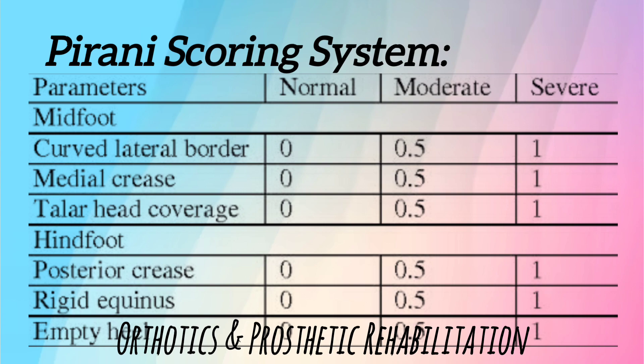The Pirani scoring system is based on six well-described clinical signs of clubfoot. Number one is posterior crease, number two is empty heel, and number three is rigid equinus — these three clinical signs are in the hindfoot. The remaining three signs are in the midfoot: talar head coverage, medial crease, and curved lateral border. If the sign is severely abnormal it scores one, if partially abnormal it scores 0.5, and if normal the score is zero.